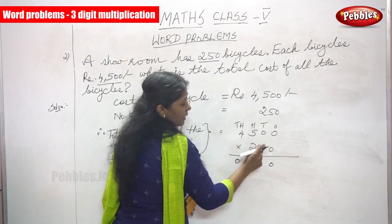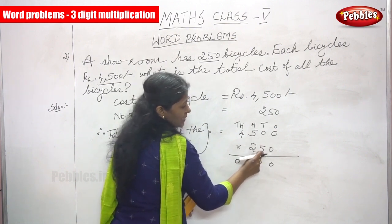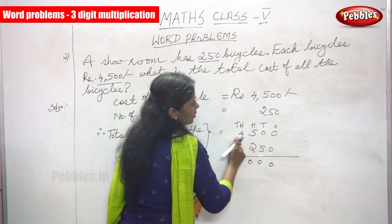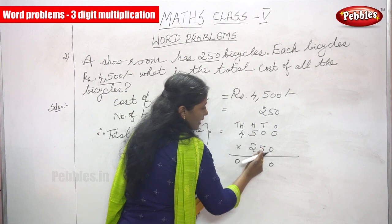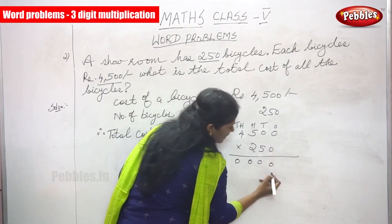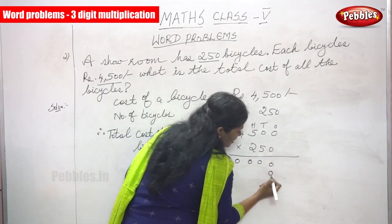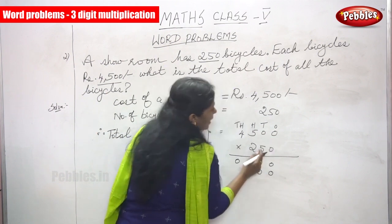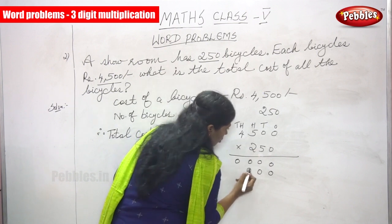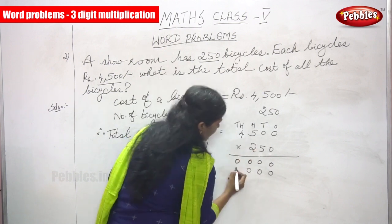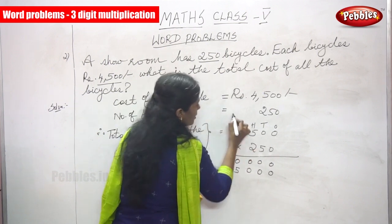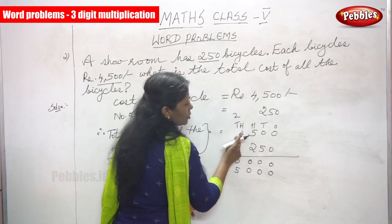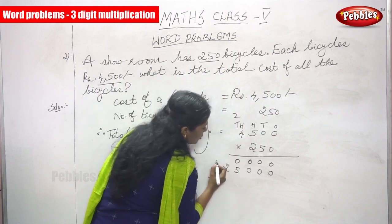Next, I am going to multiply by the tens value, which is 5. What is the number in the tens place? 5. Before that, write a 0 in the ones place. Then: 5 into 0 is 0, 5 into 0 is 0, 5 fives are 25 — write 5, carry over 2. Then 5 fours are 20, plus 2 carry over is 22.